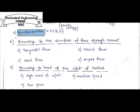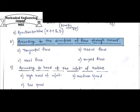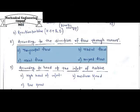The second type of classification is according to the direction of flow through the runner. On the basis of flow direction, we can categorize the turbine into four basic types: tangential flow turbine, radial flow turbine, axial flow turbine, and mixed flow turbine.